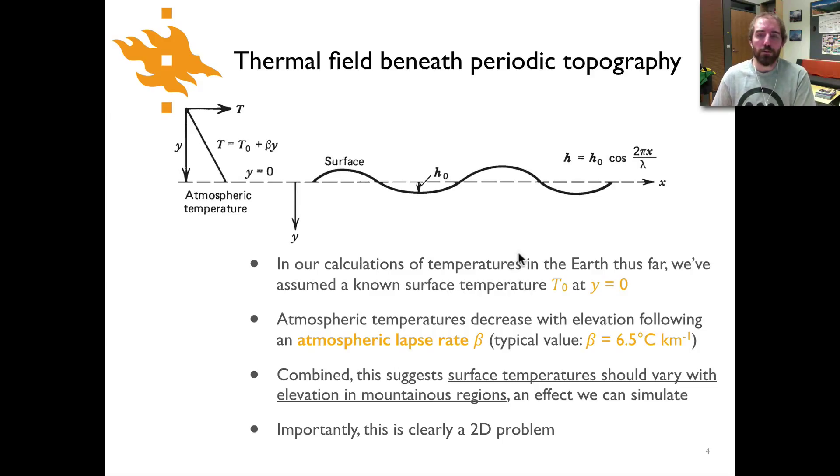And so typically what we've been doing at this point is we assume at a constant elevation y equals zero we know a constant temperature t equals t zero. But we could also consider the fact that as we go up into the atmosphere temperatures tend to decrease and typically it's about six or seven degrees cooler per kilometer you go up into the atmosphere at least within the first five or seven kilometers above the surface.